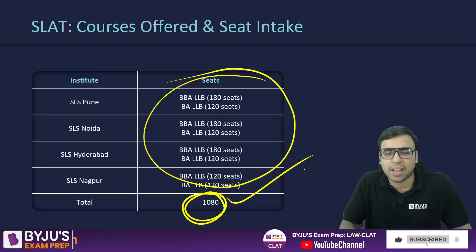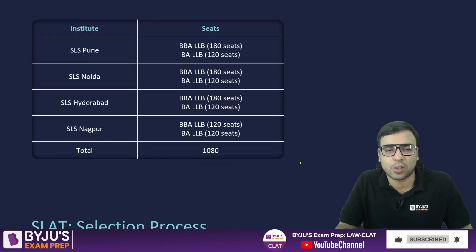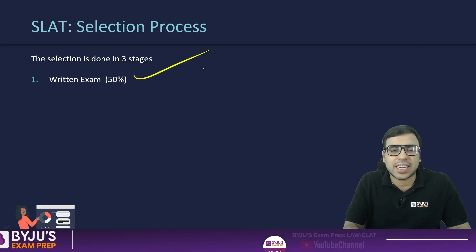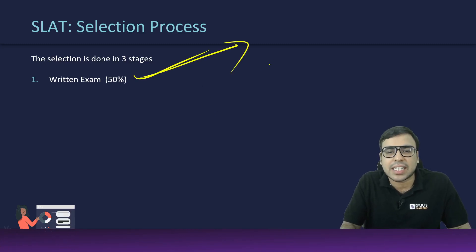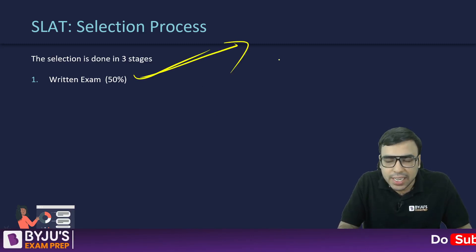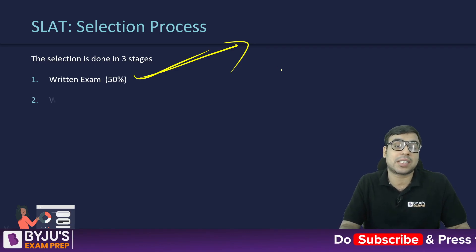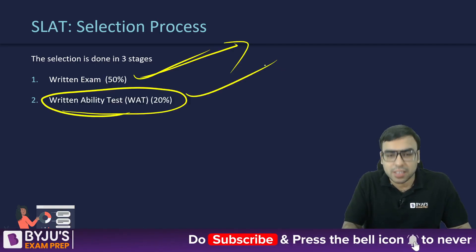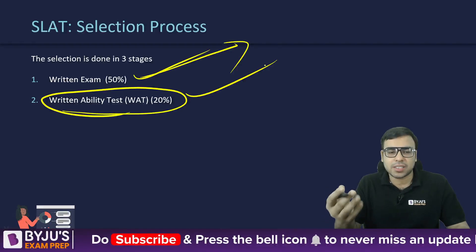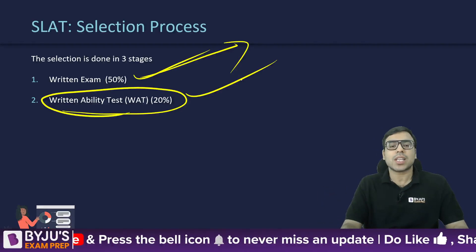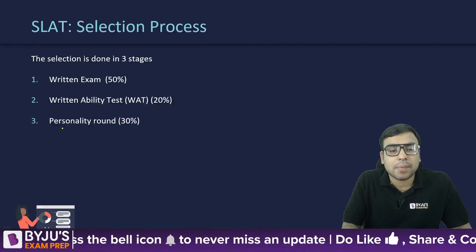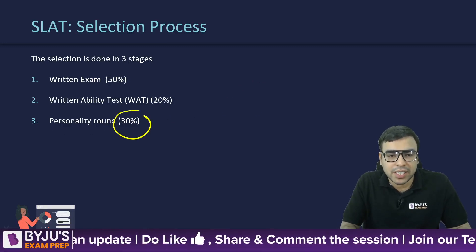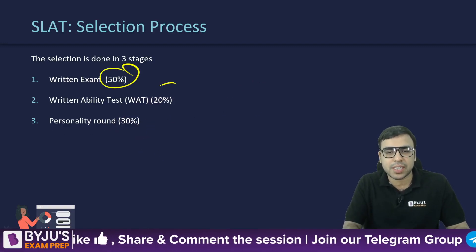The selection process consists of three components: the written examination carrying 50% weightage, the Written Ability Test (WAT) carrying 20% weightage, and the Personal Interview (PI) carrying 30% weightage. So the total is 50% + 20% + 30%.